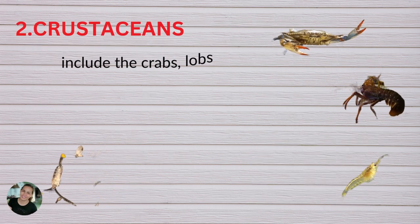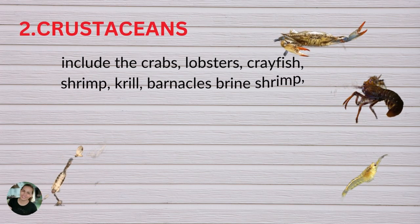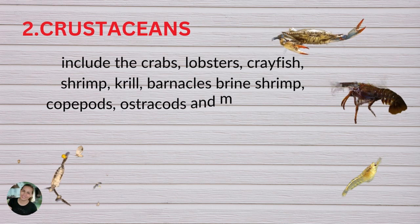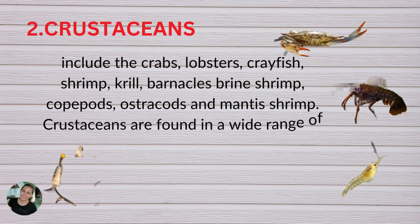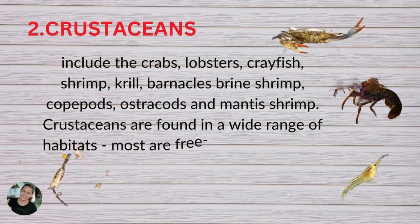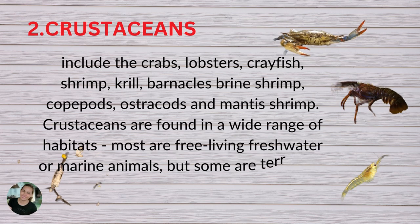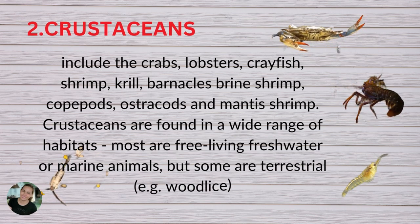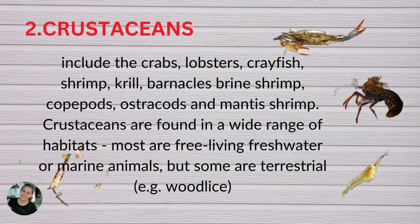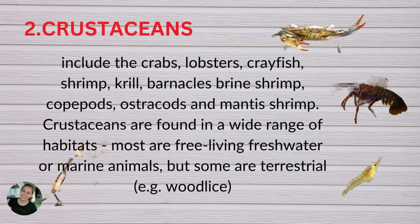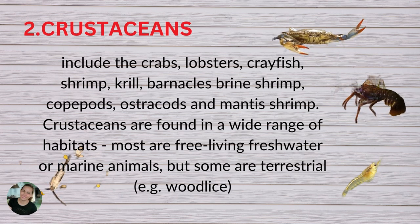The next group of arthropods are crustaceans. Crustaceans include crabs, lobsters, shrimp, krill, barnacles, brine shrimp, copepods, ostracods, and mantis shrimp. Crustaceans are found in a wide range of habitats — most are free-living freshwater or marine animals, but some are terrestrial like the woodlice.